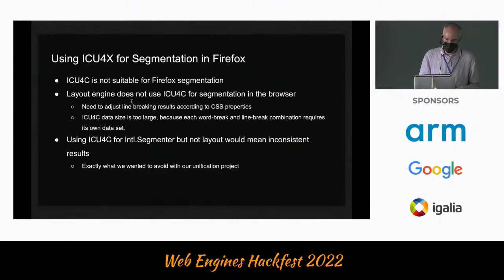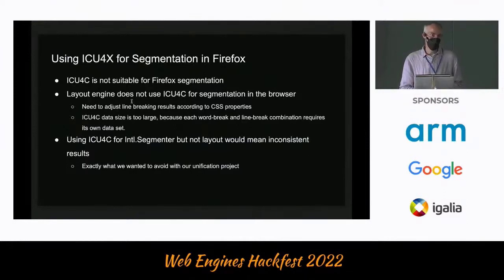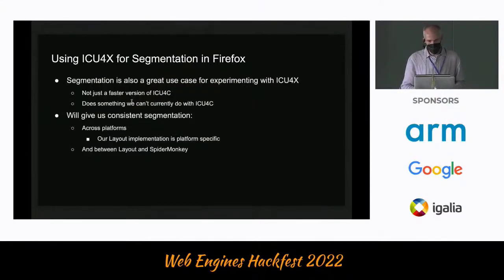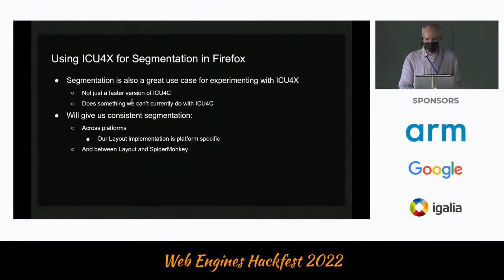ICU4C isn't really suitable for Firefox segmentation because our layout engine doesn't use it. We need to adjust line breaking results according to CSS, and that ends up with a data size that's too large because there's a combinatorial explosion of word break and line break combinations. We could use ICU4C for Intl.Segmenter, and there is an initial implementation along those lines from a couple of years ago, but that would mean results inconsistent with what layout is computing — exactly what we wanted to avoid with our unification project. Beyond that, segmentation is a great use case for ICU4X — it's not just a faster version of ICU4C. It will give us consistent segmentation and guarantee consistent results between layout and SpiderMonkey.